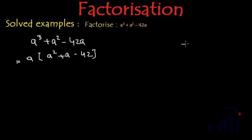And factors of -42 can be either -6 and 7 or it can be -7 and 6. But -6 + 7 gives us 1. So we can write this as 'a' as we have taken common. So 'a' will be written outside and inside the bracket we can write it as a² + 7a - 6a - 42.